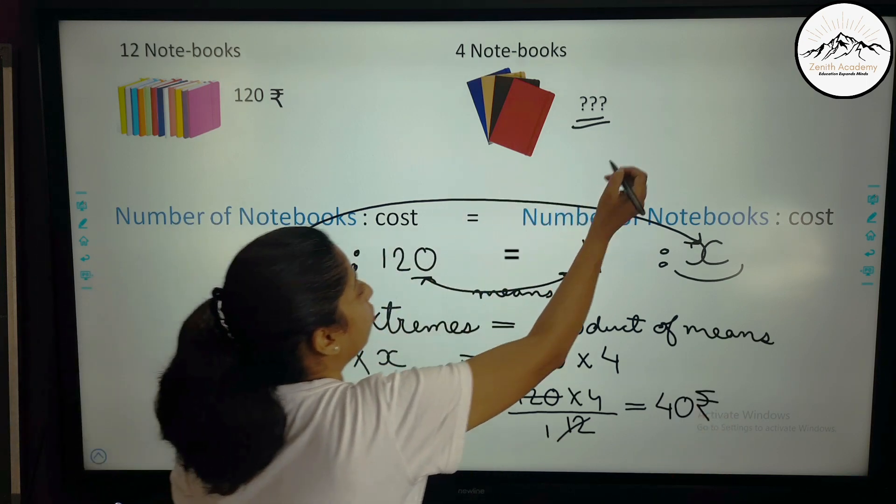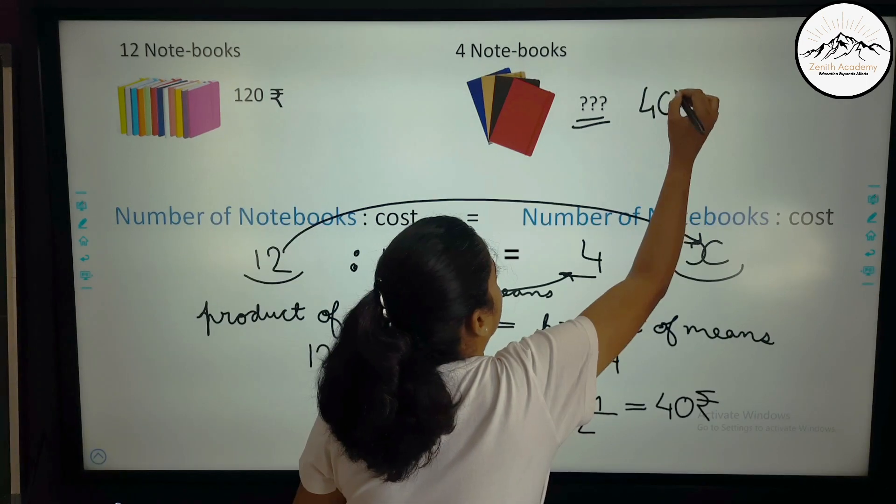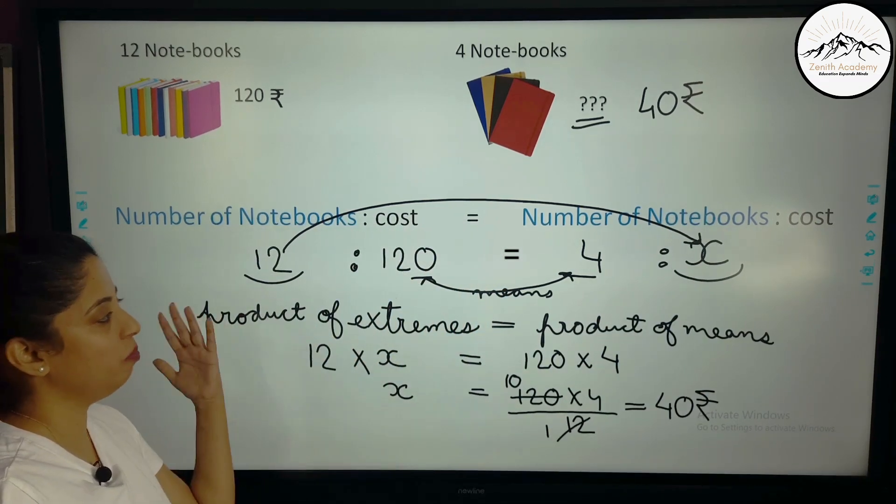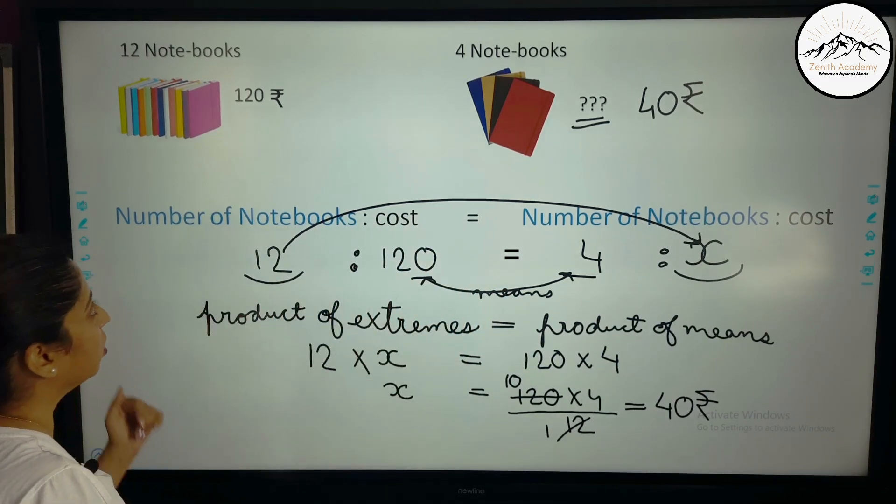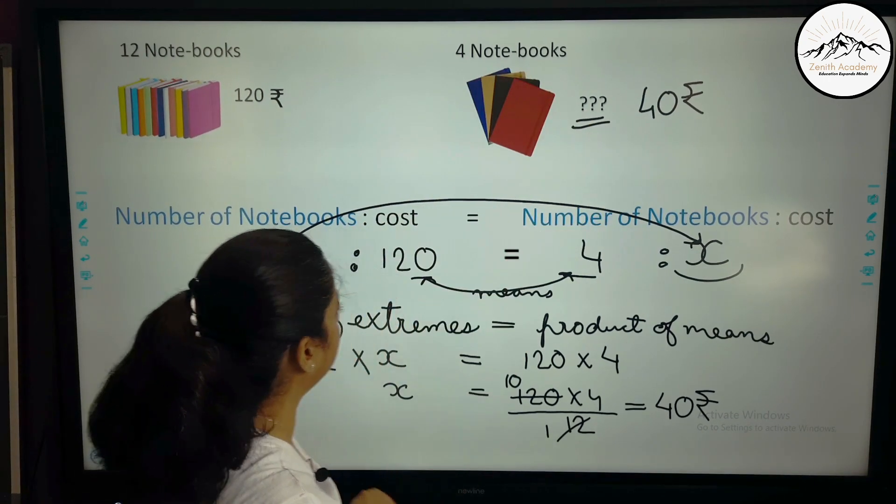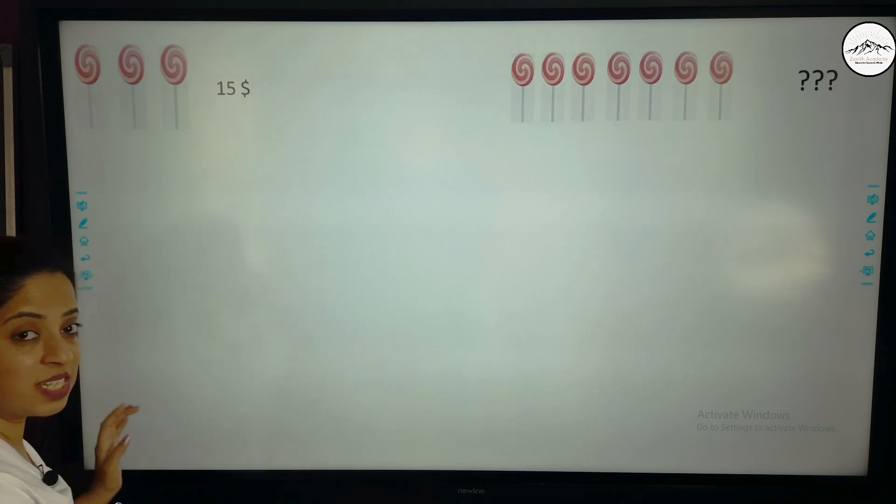So the cost of 4 notebooks is 40 rupees. So you can solve the same sum by using direct variation. So 12 is to 120 is equal to 4 is to what? Now let's see. The same sum.